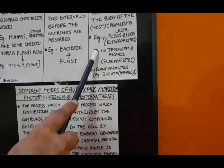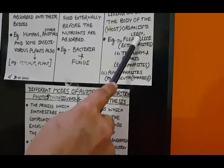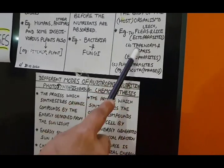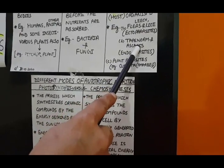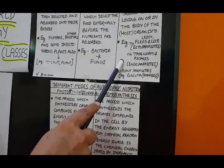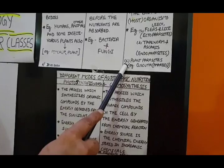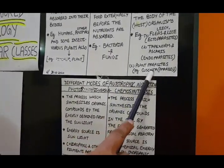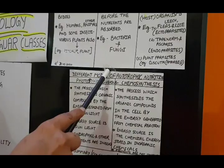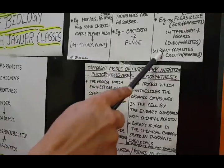For parasitic nutrition, there are two types: Ectoparasites, which live on the body of the host — such as leeches, fleas, lice, and ticks on dogs — and Endoparasites, which live inside the host body, such as tapeworm, Ascaris, and roundworms. There are also plant parasites, like Cuscuta, commonly known as Amarbel, the yellow climbing plant often seen wrapping around other plants.